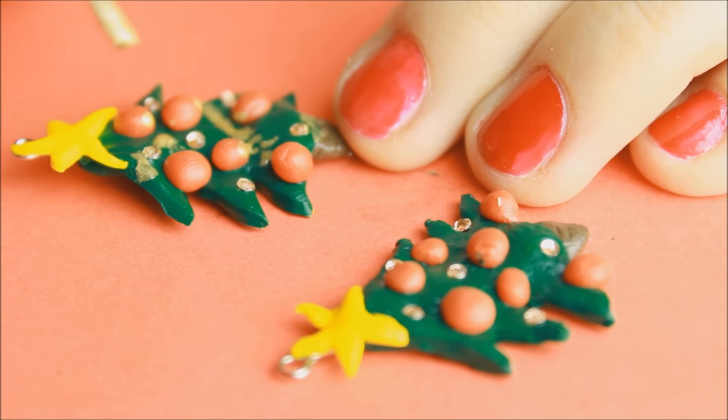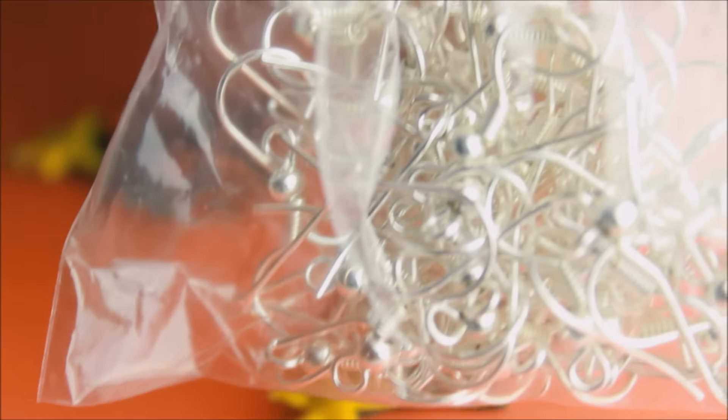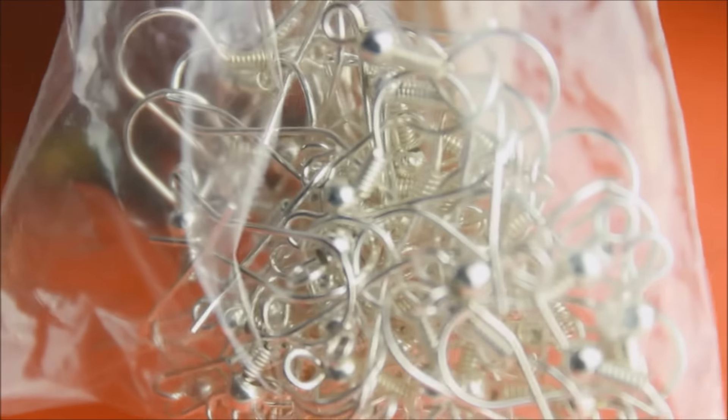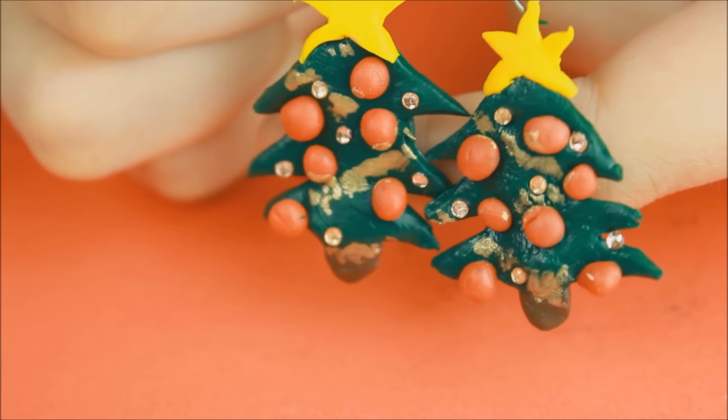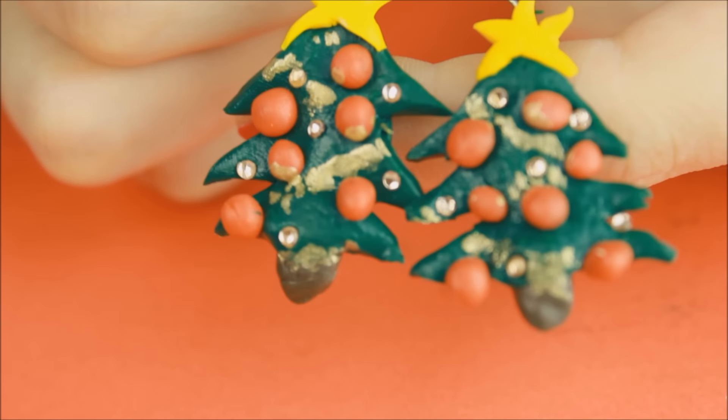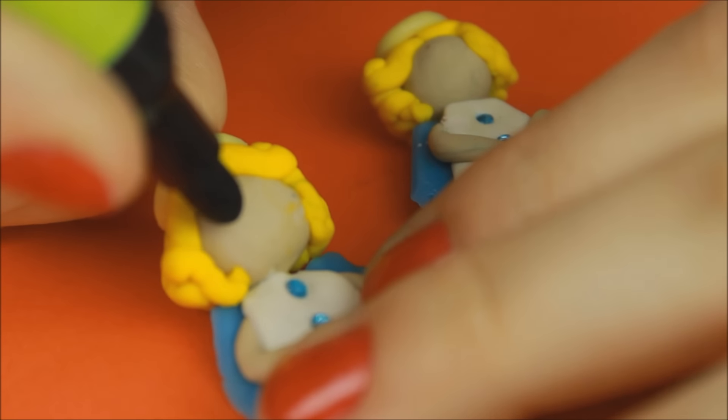Jetzt habe ich hier diese Stifte abgeschnitten, die überstehenden Ränder mit einer Zange. Und dann habe ich mich noch dazu entschieden, die Bäume zu dekorieren mit goldenem Nagellack. Das sieht dann so aus wie Lametta. Und hier seht ihr schon meine Ohrringhalter. Die habe ich auch bei Amazon gekauft. Wie sollte es anders sein? Das war so ein Hunderterpack. Und schon sind die Tannenbäume fertig.